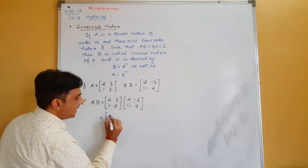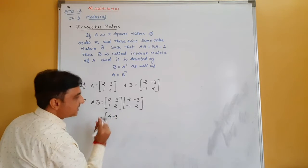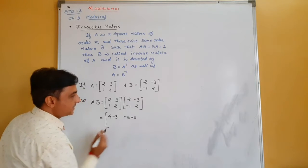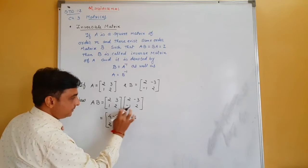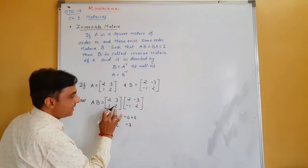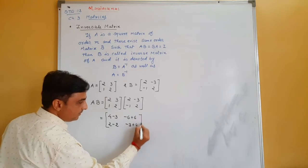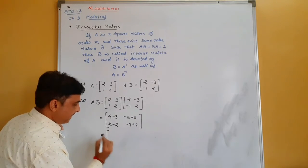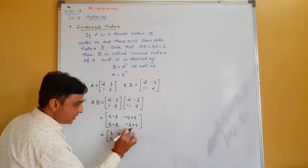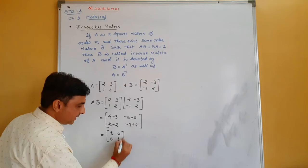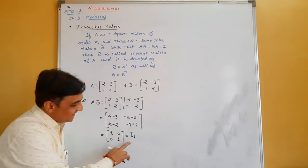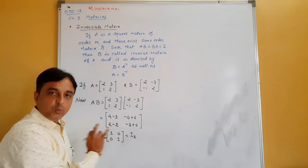Computing AB: multiplying [2,3;1,2] by [2,-3;-1,2], we get entries: 4 minus 3 equals 1, 6 minus 6 equals 0, 2 minus 2 equals 0, and 3 minus 2... wait, 4 minus 3 equals 1. The result is [1,0;0,1], which is the identity matrix I₂.